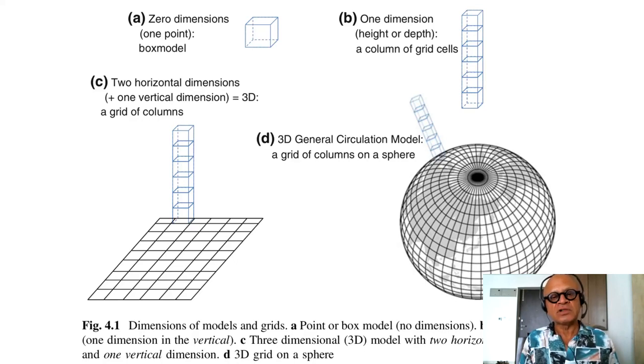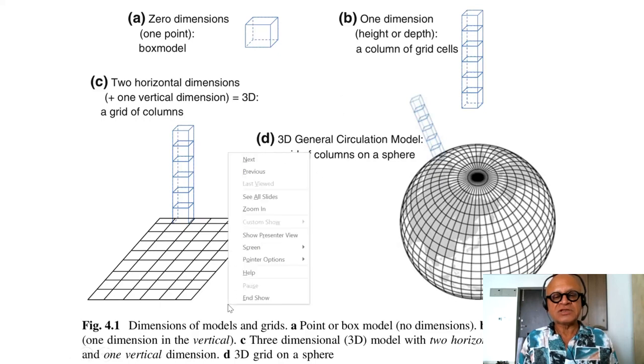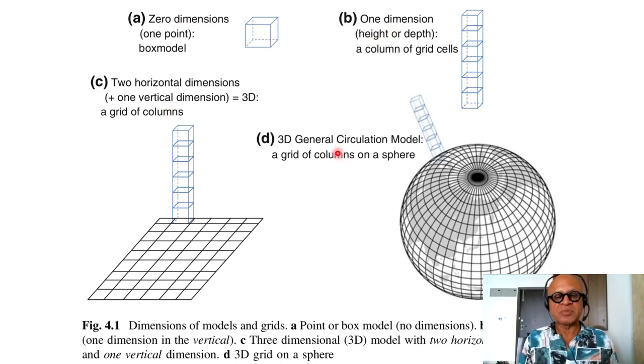Determinations are made based on what you are trying to do about the complexity of the model you want to study your process with. You can have dimensions of models that are going from 0 to 1 to 2 and 3 dimensions. Time is the separate dimension here.